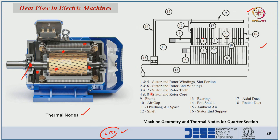Nodes 5 through 8 represent the rotor components: node 5 is rotor winding, node 6 is rotor end winding, node 7 is rotor teeth, and node 8 is rotor core. Node 10 represents the air gap, node 18 represents the radial duct, node 9 is the machine frame, nodes 14 are the enclosures at both sides, node 13 is the bearing, node 12 is the shaft, and node 11 is the air gap space at the entry portion.